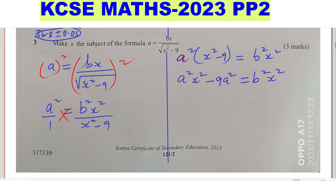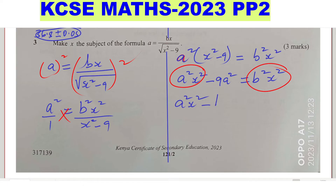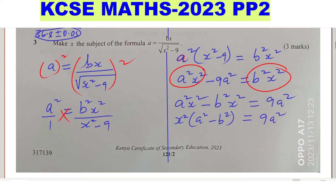Since you're making x the subject, bring the x terms to the same side. Bring b squared x squared to the left-hand side. You get a squared x squared minus b squared x squared equals 9a squared. On the left-hand side, factor out x squared, and you remain with x squared times (a squared minus b squared) equals 9a squared.